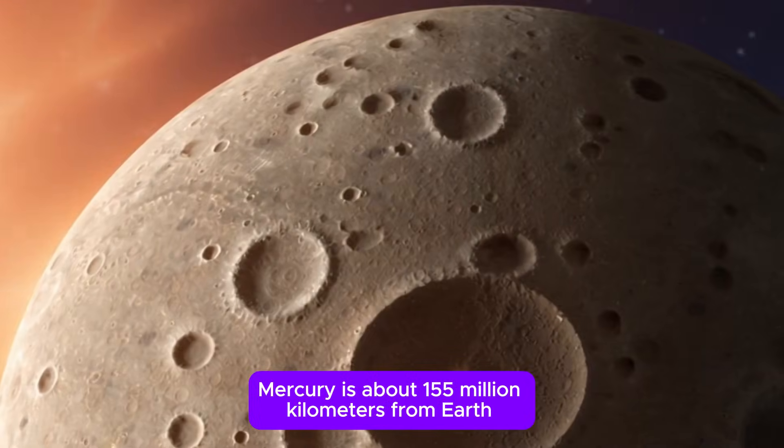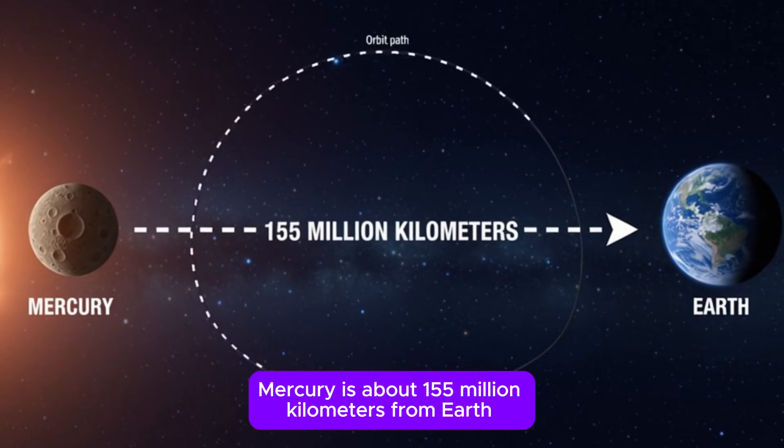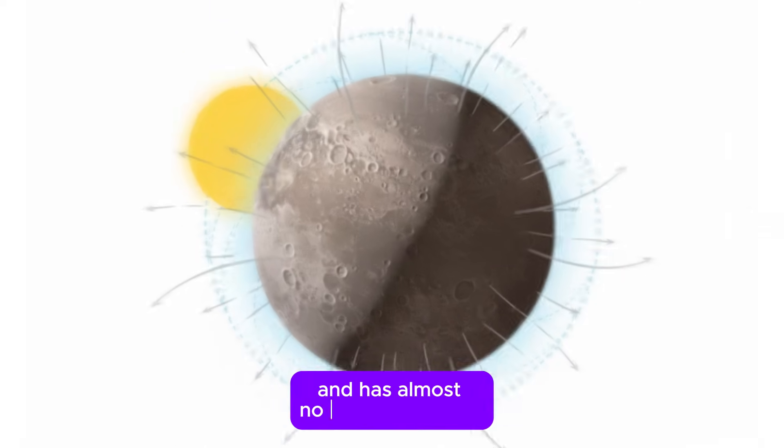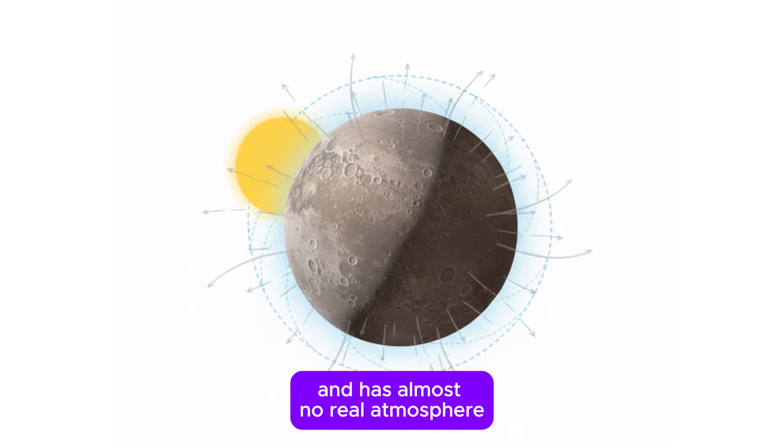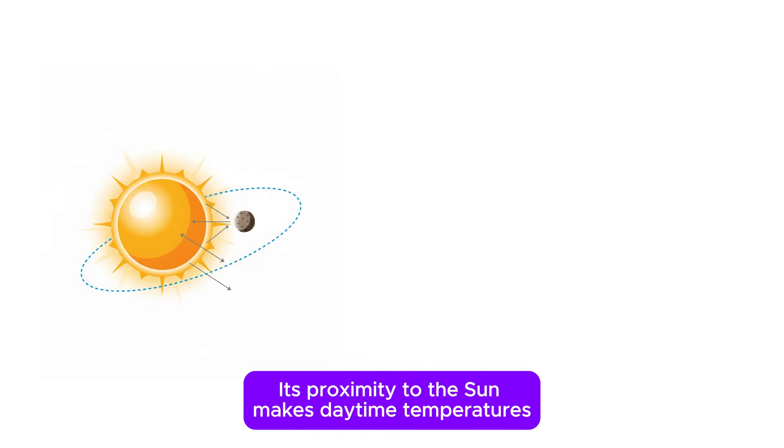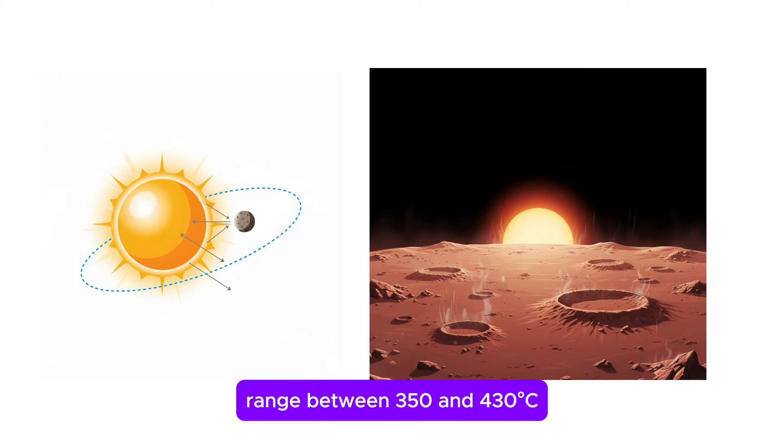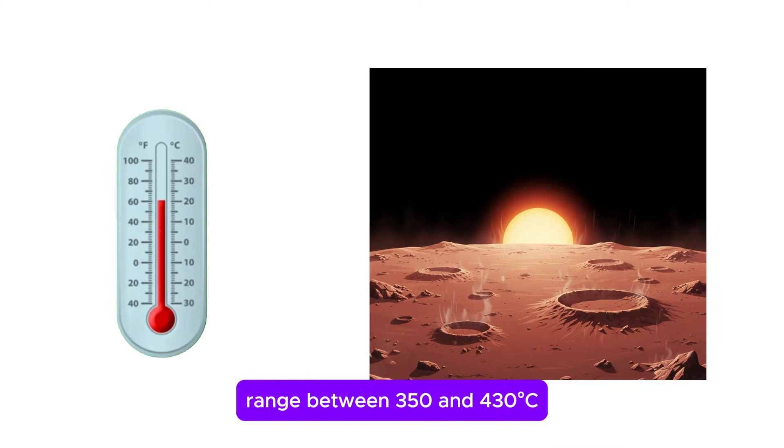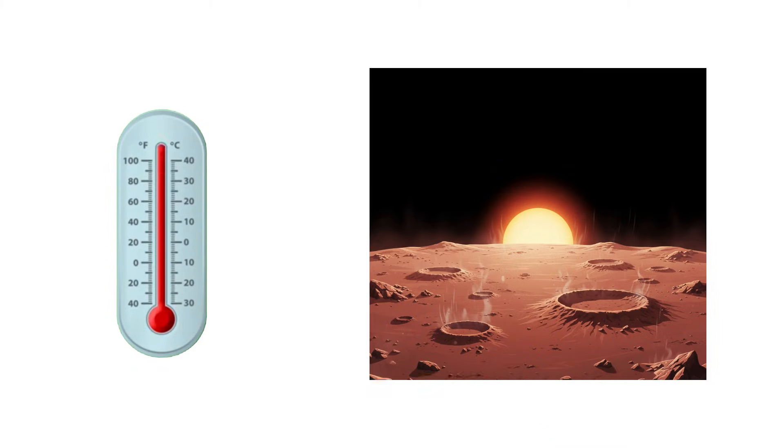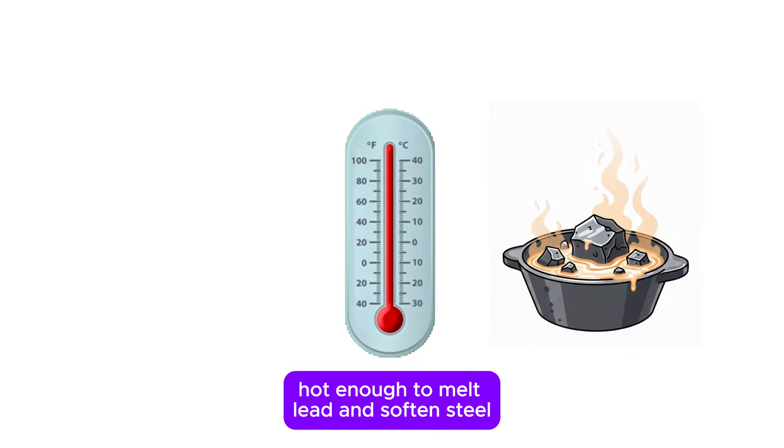Mercury. Mercury is about 155 million kilometers from Earth and has almost no real atmosphere. Its proximity to the sun makes daytime temperatures range between 350 and 430 degrees Celsius, hot enough to melt lead and soften steel.